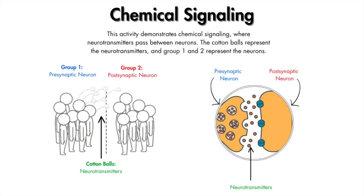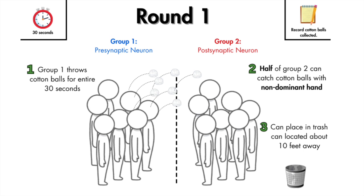You can briefly ask students what they notice and wonder, but save the bigger discussion for after chemical signaling too. For the chemical signaling activity, you'll need cotton balls or craft pom-pom balls — you can even rip up paper into little balls. Students are separated into two sides: the first group represents the pre-synaptic neuron, the second represents the post-synaptic neuron, and the cotton balls represent neurotransmitters. Round one: for 30 seconds the pre-synaptic side tosses cotton balls.